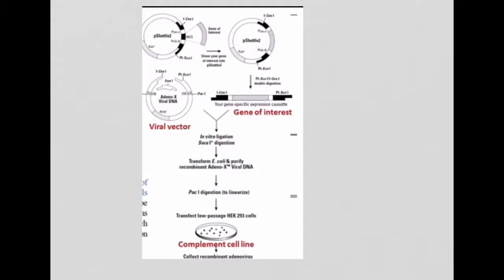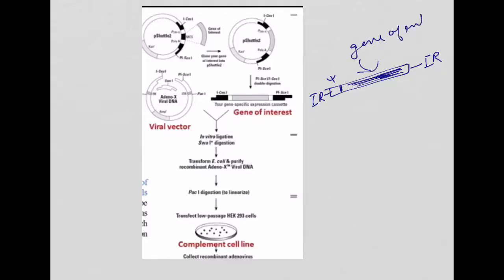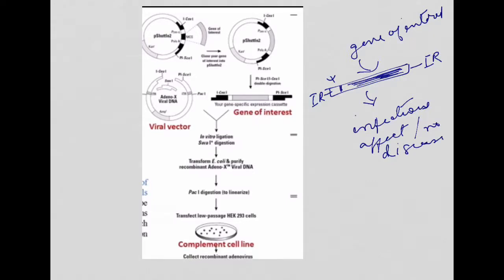Since the third generation gutless vector lacks all genes for its multiplication and contains only the gene of interest, the higher sequence, and the psi signal, it is not able to cause any infectious effect. However, we need to multiply this genome, and we do so inside a cell line called HEK 293.